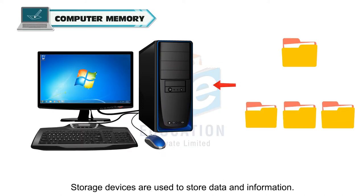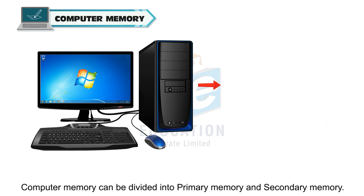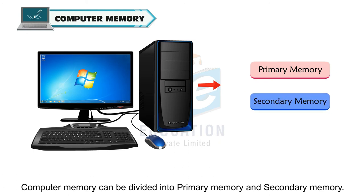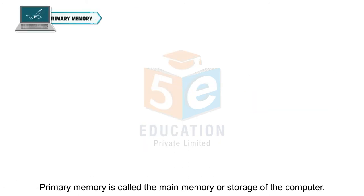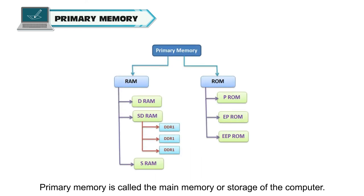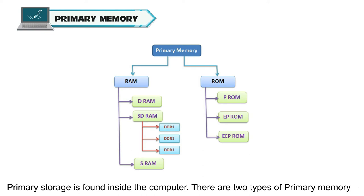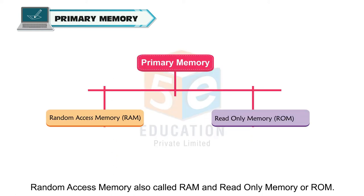Storage devices are used to store data and information. Computer memory can be divided into primary memory and secondary memory. Primary memory is called the main memory or storage of the computer, and it is found inside the computer. There are two types of primary memory: random access memory, also called RAM, and read-only memory or ROM.